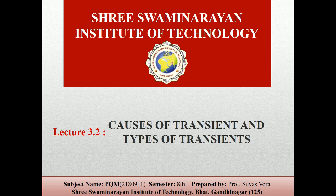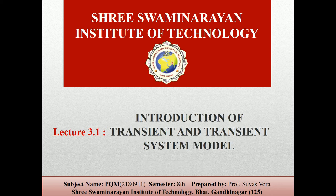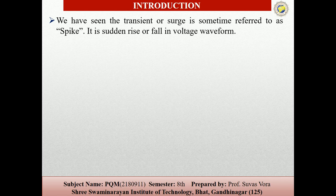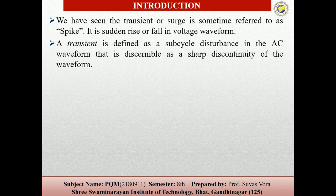In the last lecture, we saw the introduction of the transient and the transient system model. Transient is nothing but one type of interruption in our power systems or frequencies. We have seen the transient or surge, also referred to as a spike, and it is a sudden rise or fall in the waveforms. The transient definition states that these are sub-cycle disturbances in the AC waveforms that appear as a sharp discontinuity of the waveforms.